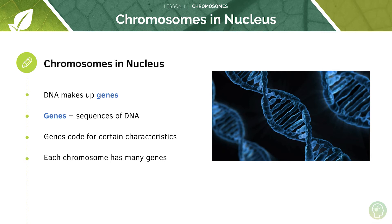A gene is a section of DNA that codes for certain characteristics, therefore a chromosome has many genes. If we were to put this almost like a hierarchy: your DNA forms your genes, your genes code for a certain characteristic, and many genes make up a chromosome.